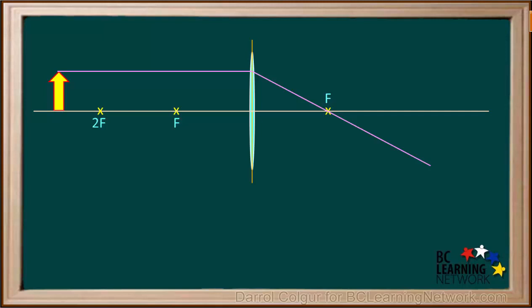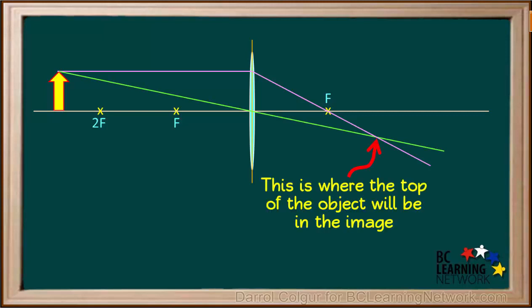Now we draw a straight line from the top of the object through the middle of the lens. The point where these two lines cross each other is the point where the top of the object will be in the image.